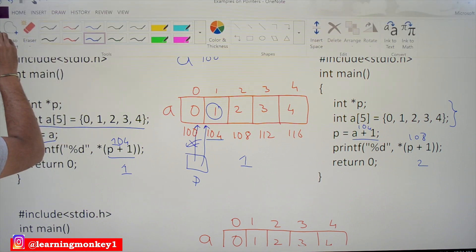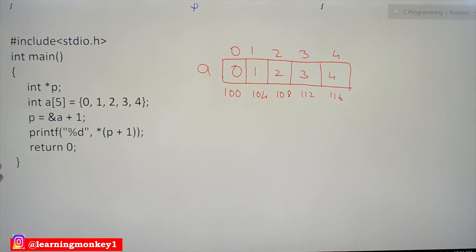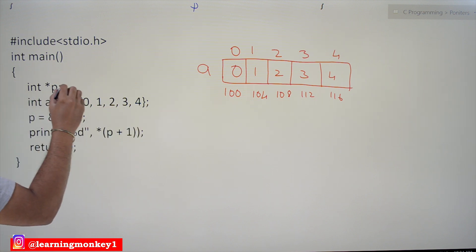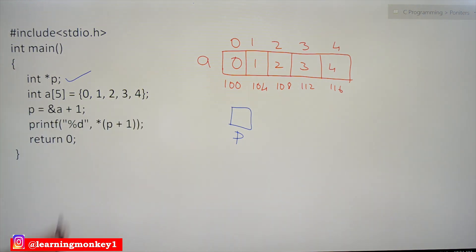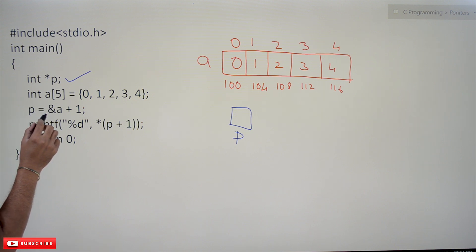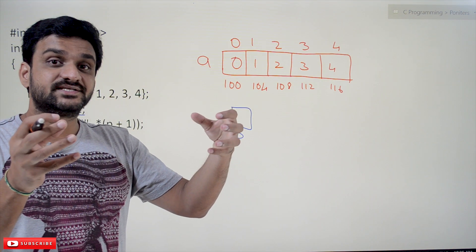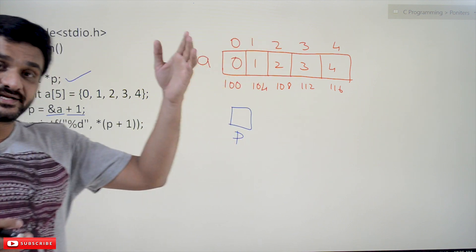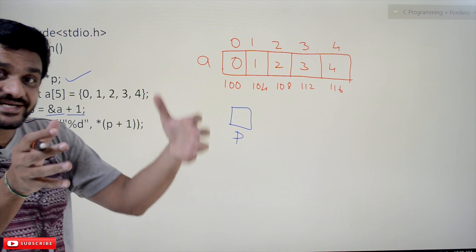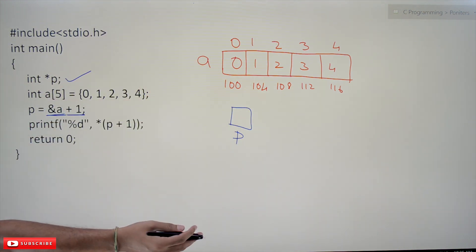In the third example: same pointer P declared but not allocated, and the same array of five elements. But here we have P = &a + 1. What &a means is the address of the complete array — not just the first element's address. It is going to consider the complete array's address.